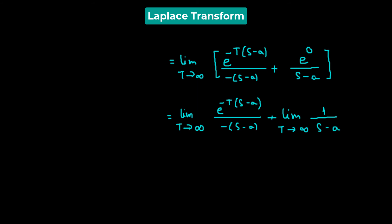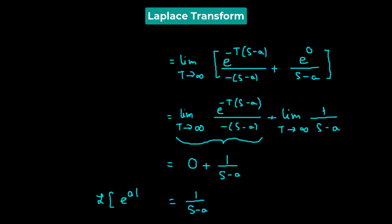Now, e raised to the power of negative t times s minus a is a decaying exponential function. So when t approaches an extremely large number, e raised to the power of negative t times s minus a tends towards 0. So the limiting value of the entire function is going to be 0 plus 1 over s minus a, which is simply 1 over s minus a. This is the Laplace transform of e raised to the power of at, and it exists for s minus a greater than 0, or simply s greater than a.